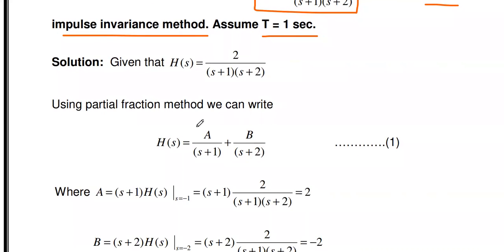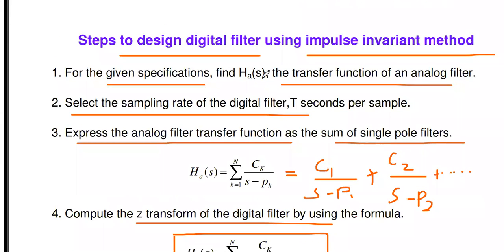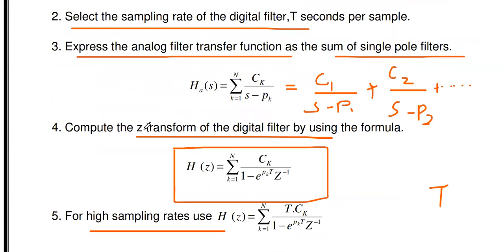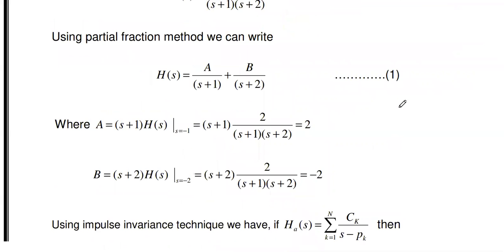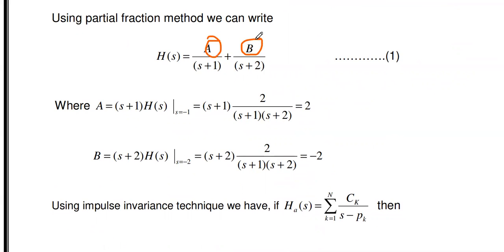In this problem, the analog transfer function H(S) is directly given, and T = 1 second is given, so steps one and two are already done. For step three, we express H(S) = 2/[(S+1)(S+2)] as a sum of single-pole functions using partial fractions: H(S) = A/(S+1) + B/(S+2). We need to find the values of A and B.